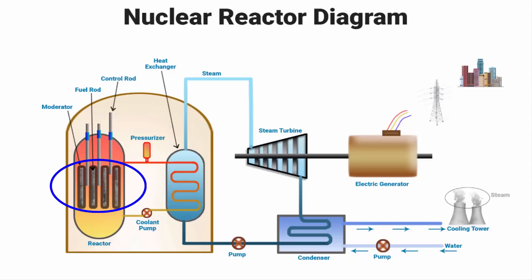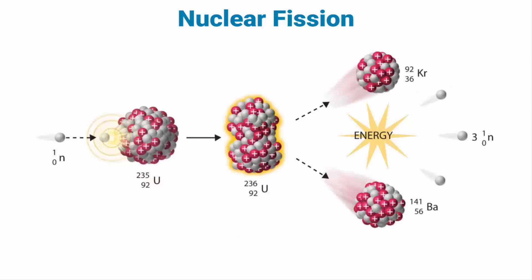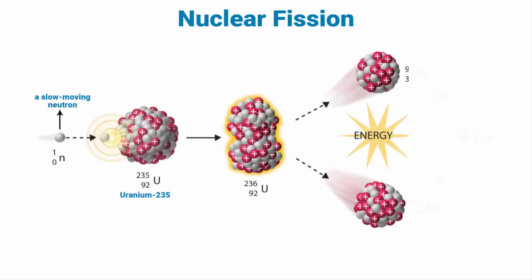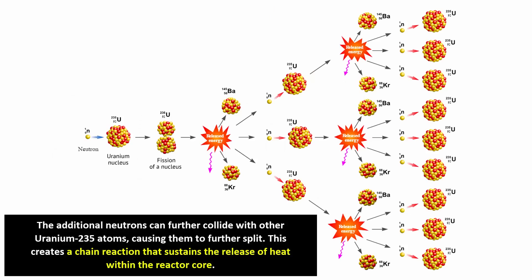Now let's understand this nuclear fission reaction more closely. What happens is that a slow moving neutron collides with a specific isotope of uranium that is uranium-235 causing it to split. This process is called fission, it is not fusion, it is fission. It releases a large amount of energy in the form of heat and additional neutrons. The additional neutrons can further collide with other uranium-235 atoms, causing them to further split. This creates a chain reaction that sustains the release of heat within the reactor core.